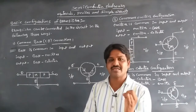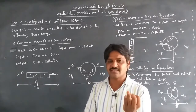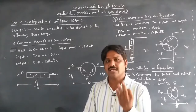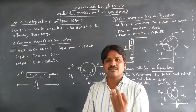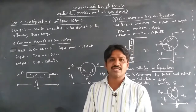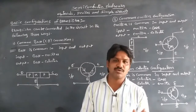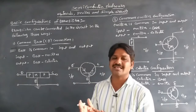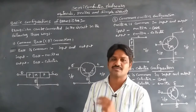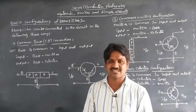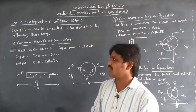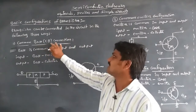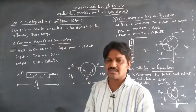The transistor has three terminals: emitter, base, and collector. One of these terminals is commonly used for both input and output. That is why there are three types of transistor connections, the first of which is the common base connection.